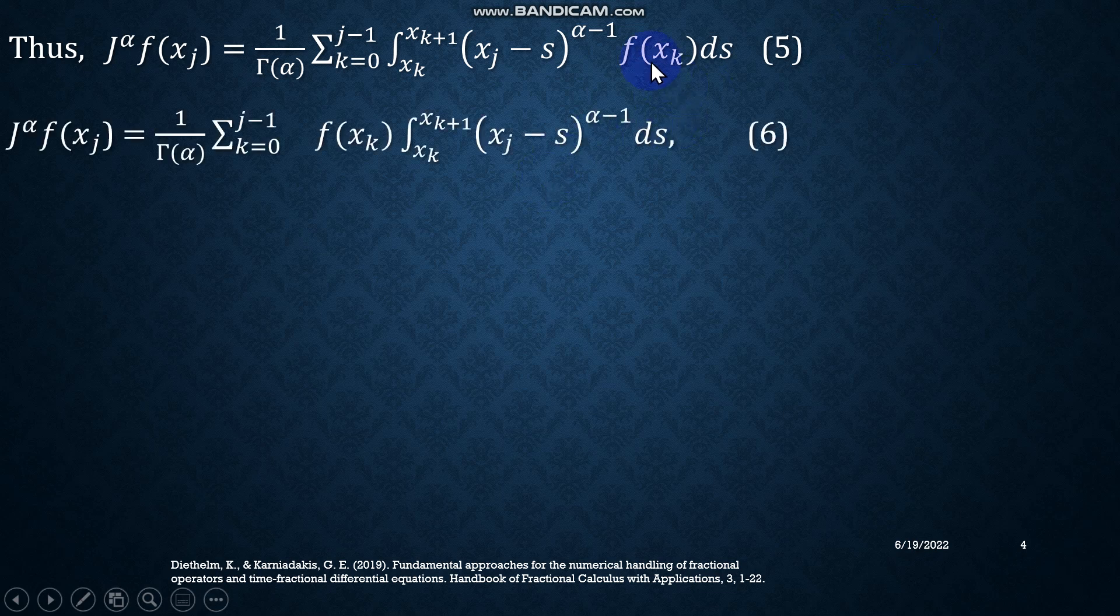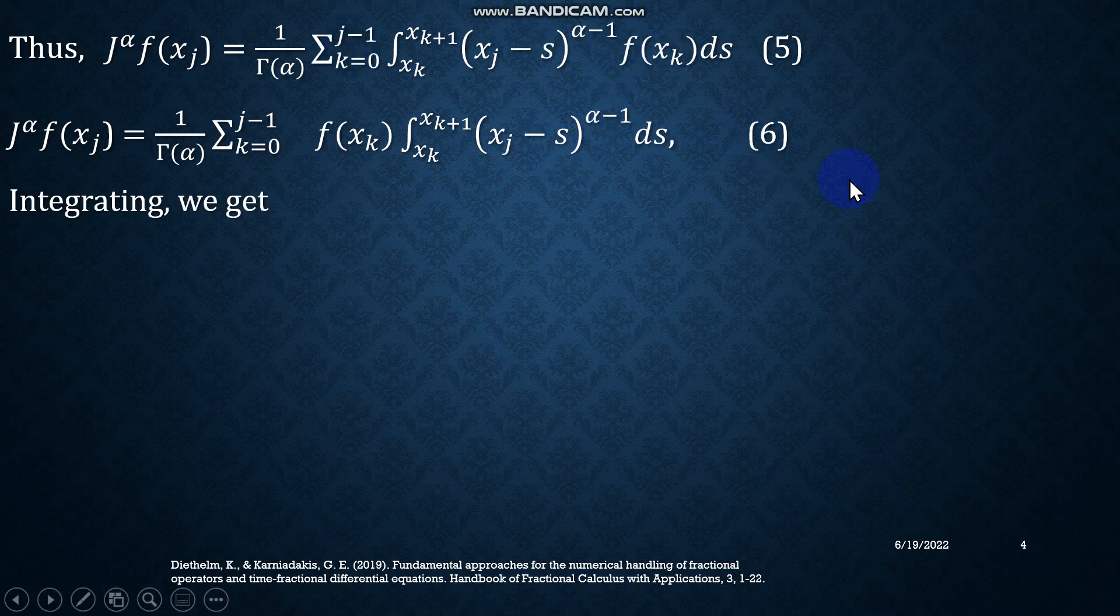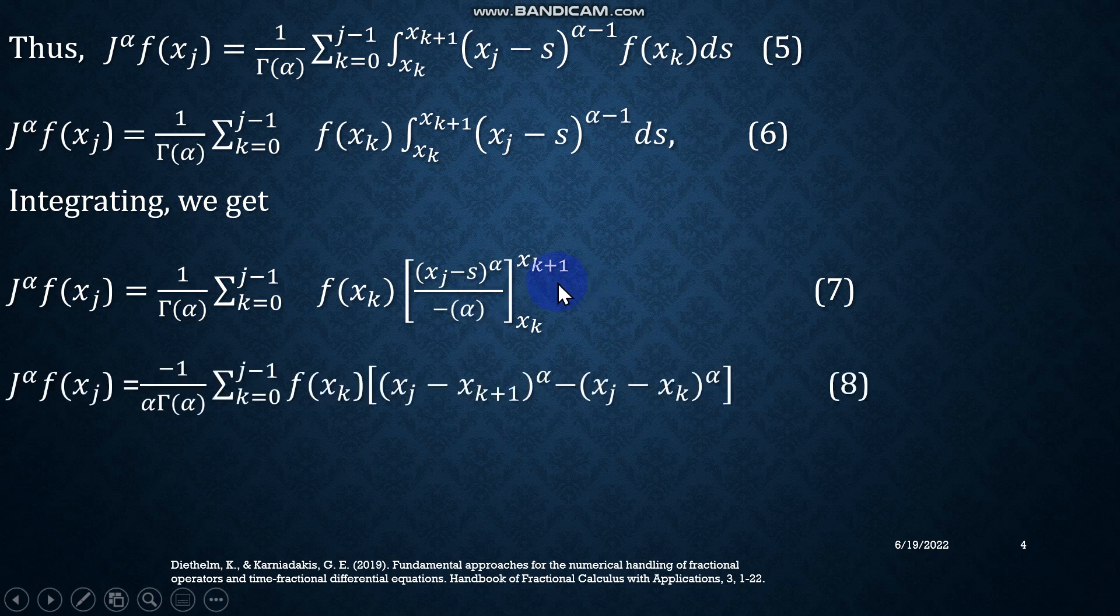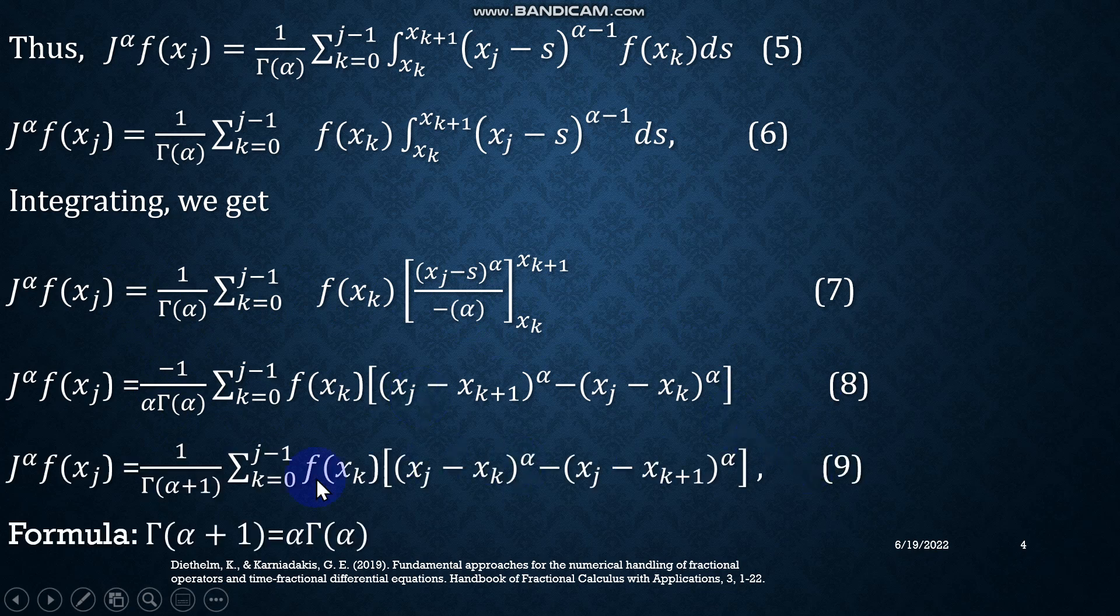So in equation 5, now I have taken outside this term f(xₖ), and hence we have equation number 6. If I integrate equation 6, I will have equation 7, where the integration is performed just by the power rule. After that, using the fundamental rule of calculus, you can get equation number 8 by taking this -α out of the summation sign. And equation number 9 is obtained by using this property of the gamma function and multiplying this -1 with the terms inside the summation.